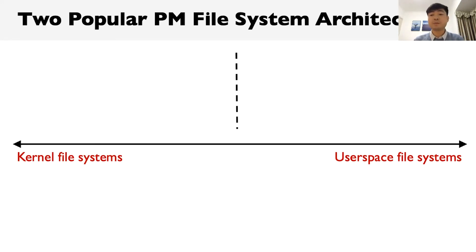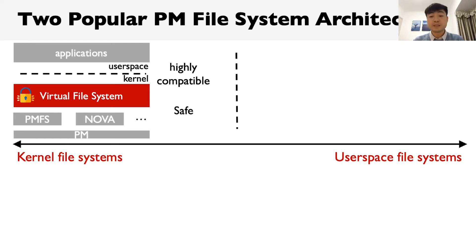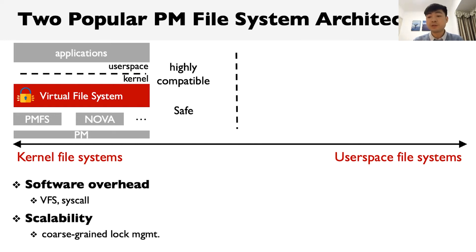Existing persistent memory file systems can be roughly categorized into two types. One is kernel file systems, where the file system is placed in the kernel and applications use syscalls to trap into the kernel and access files. These kernel file systems are implemented by overriding virtual file system functions, such as PMFS and NOVA. They ensure safety and are highly compatible by providing standard APIs to applications. However, kernel file systems still incur software overhead due to the VFS layer and syscalls, and are hard to scale well since the VFS layer often uses global locks.